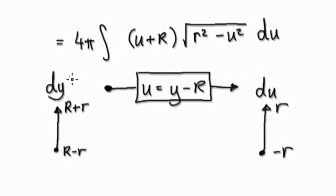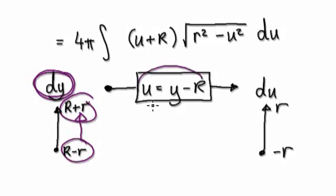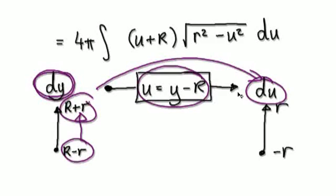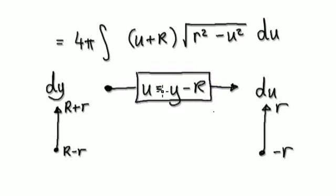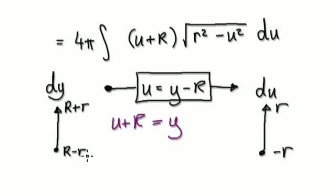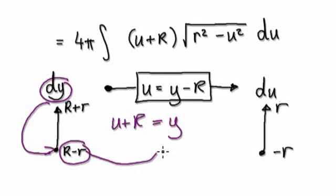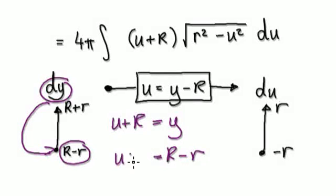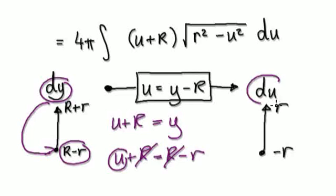In the dy realm, we were integrating from capital R minus r to capital R plus r. Now because we made this substitution, we are in the du world. Rearranging the substitution to make y the subject: if you add capital R to both sides, that gives y equals u plus capital R. We are integrating from y equals capital R minus r, so putting that in gives u equals negative r.